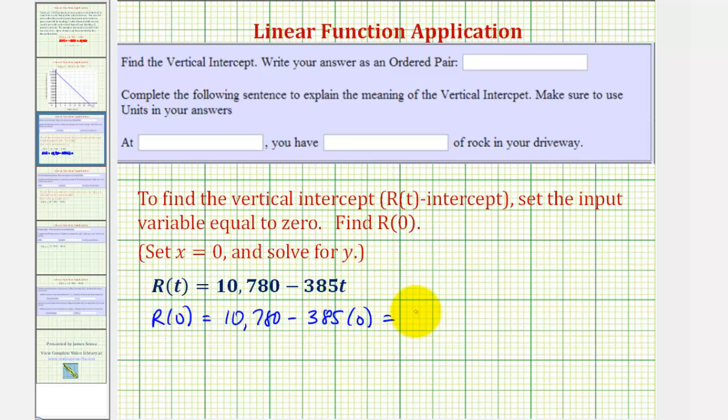Notice how R(0) is 10,780. So as an ordered pair, the vertical intercept would be the point (0, 10,780).